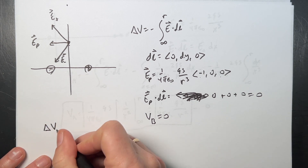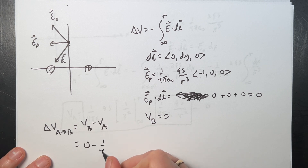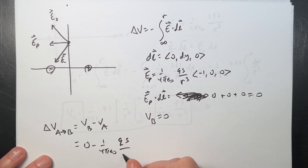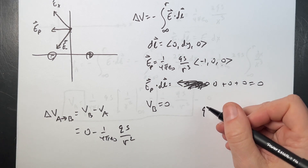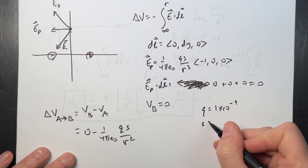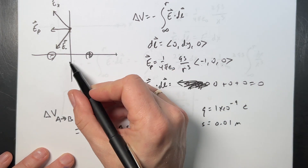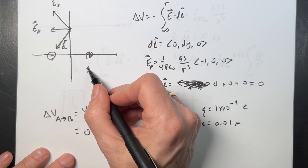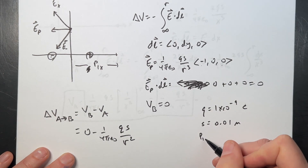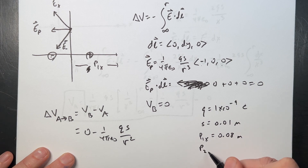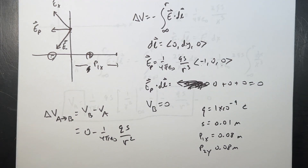Now I can put it all together. Delta V from A to B is VB minus VA = 0 minus (1/4πε₀)(Qs/R²). For my chosen values: Q = 1×10⁻⁹ C, s = 0.01 m, and both points at R = 0.08 m from the origin along their respective axes. That's my analytical answer.